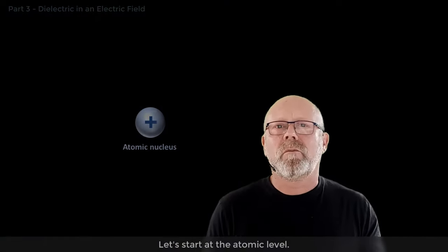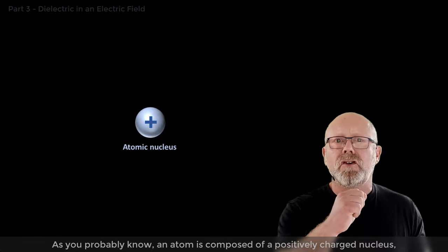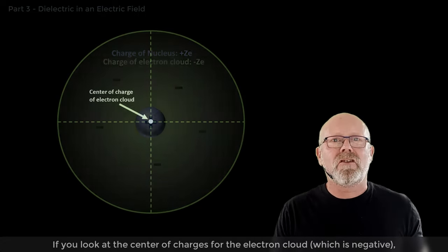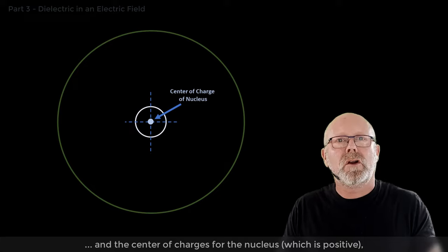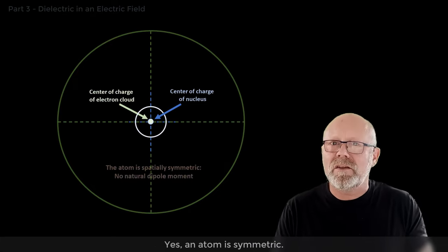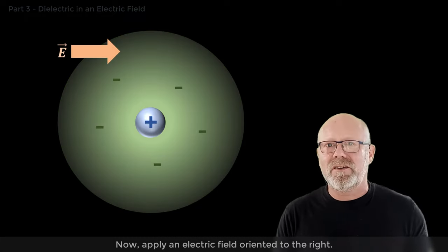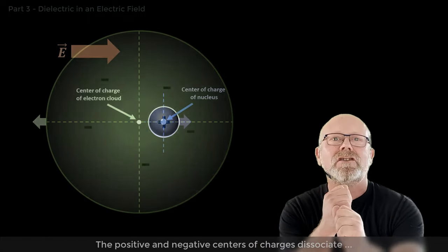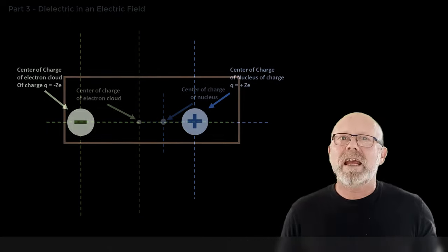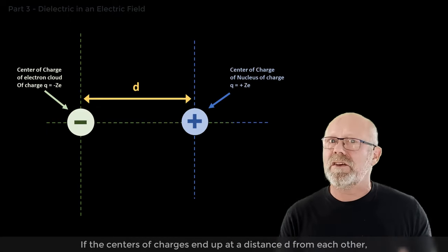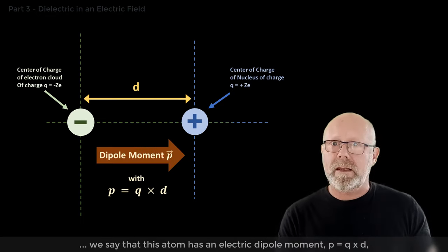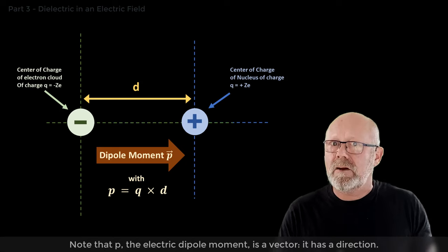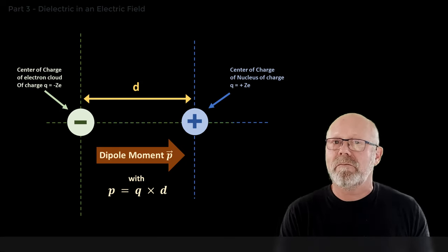Let's start at the atomic level. An atom is composed of a positively charged nucleus and a negatively charged electron cloud located around it. If you look at the center of charges for the electron cloud, which is negative, and the center of charges for the nucleus, which is positive, they are at the same position — an atom is symmetric. Now, apply an electric field oriented to the right. The nucleus will be pushed to the right, and the electron cloud will be pushed to the left. The positive and negative centers of charges dissociate and move away from each other, creating a dipole. If the centers of charges end up at a distance d from each other, we say that this atom has an electric dipole moment p equal to q multiplied by d, where q is the charge of the electron cloud that was displaced. Note that p, the electric dipole moment, is a vector — it has a direction. The atom is polarized.